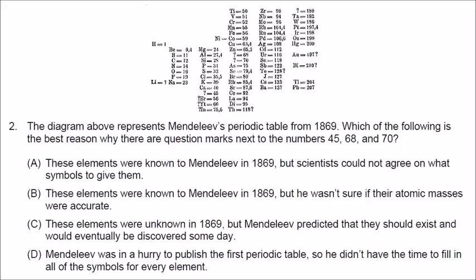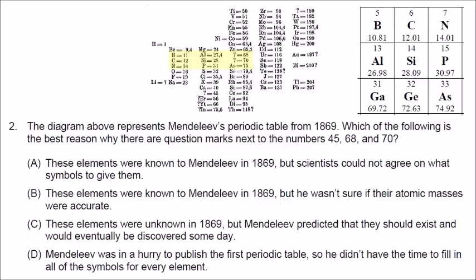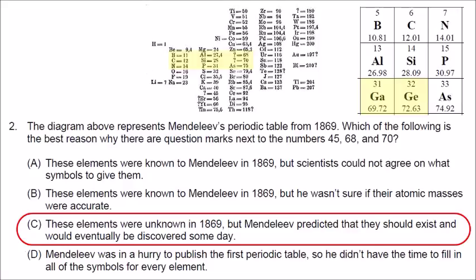Number two: the diagram represents Mendeleev's periodic table from 1869. The question asks why there are question marks next to the numbers 45, 68, and 70. You can see symbols for boron, carbon, and nitrogen, then aluminum, silicon, and phosphorus. Next to aluminum and silicon are question marks. On the modern periodic table, the elements below aluminum and silicon are gallium and germanium, which were unknown in Mendeleev's time, but he predicted they should exist and would eventually be discovered. So the correct answer is C.